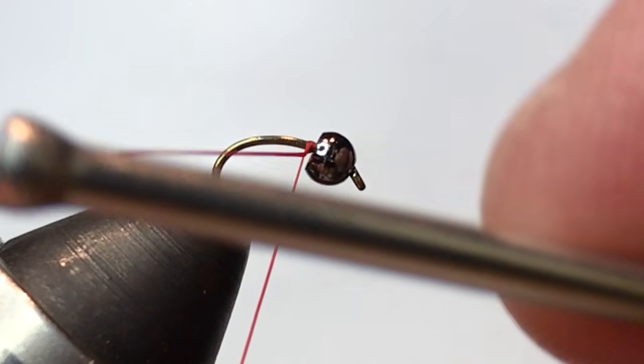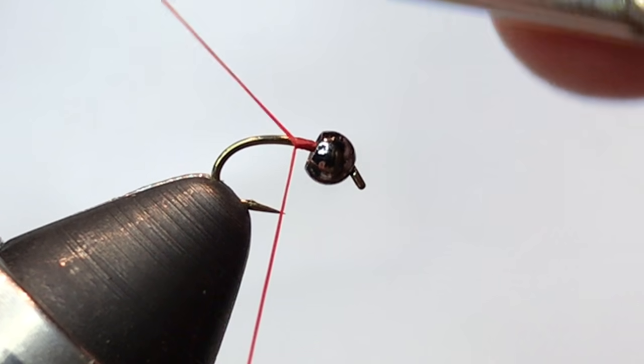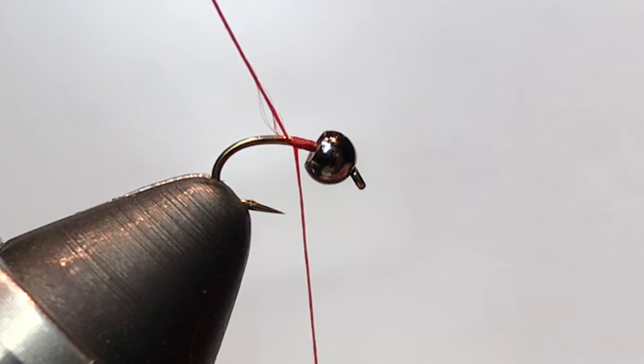Offer the thread to your hook just behind the bead. Wrap back a few times, enough to catch that tag and snip it off.